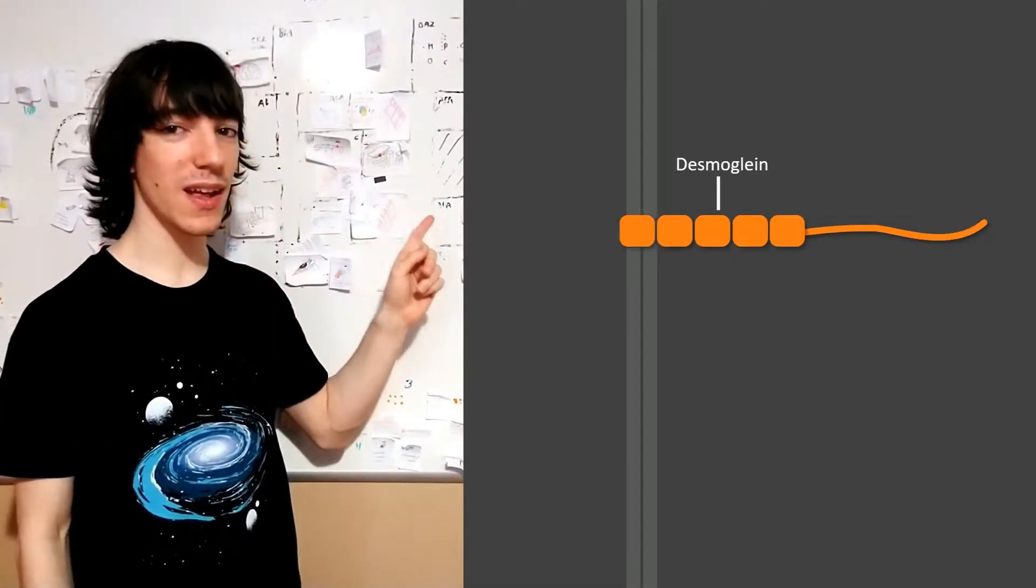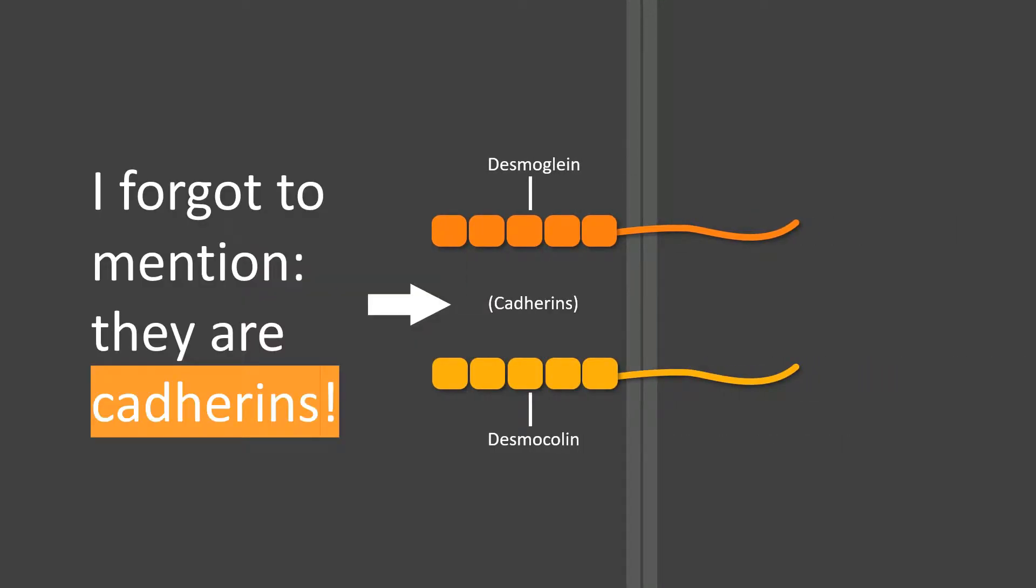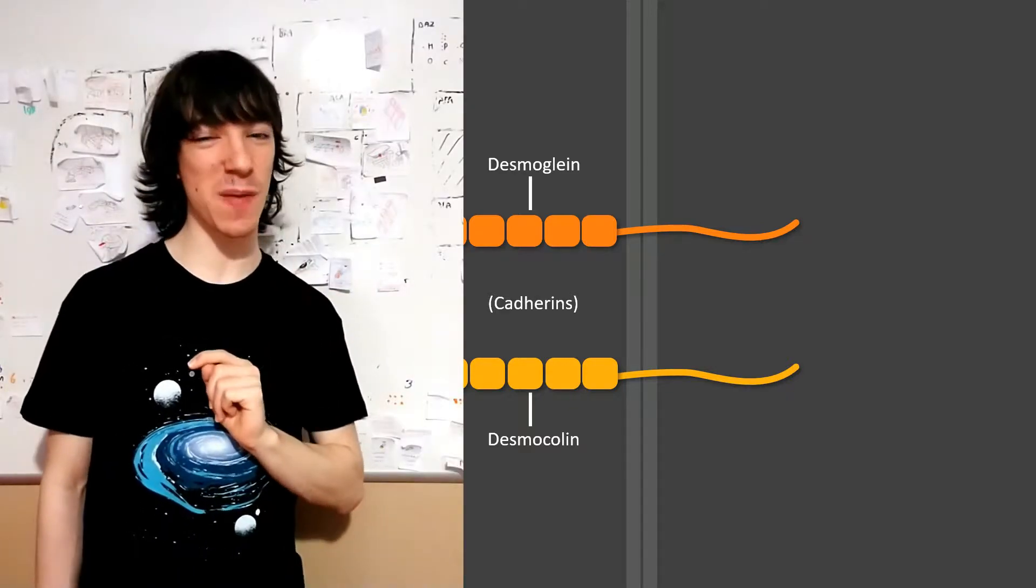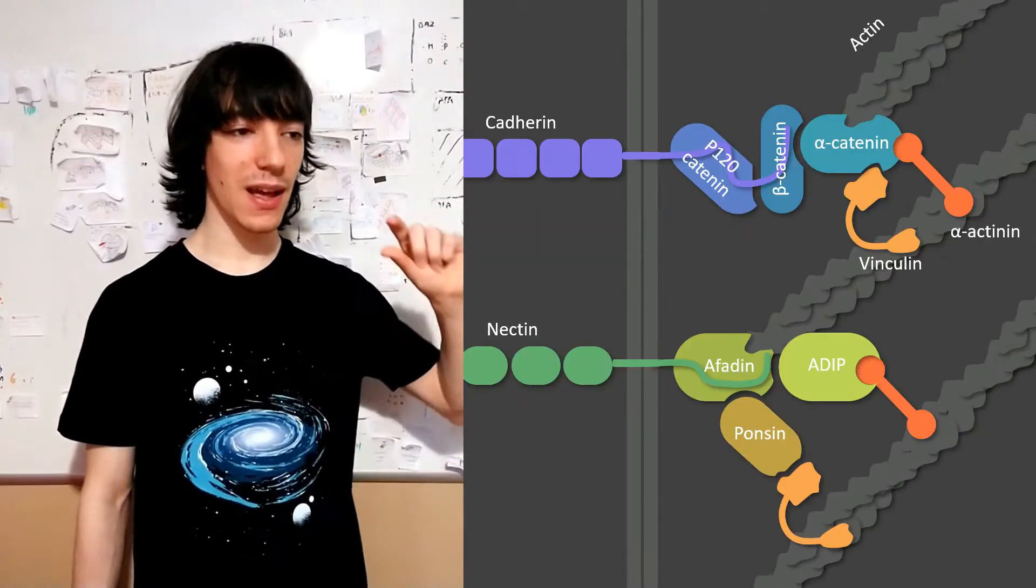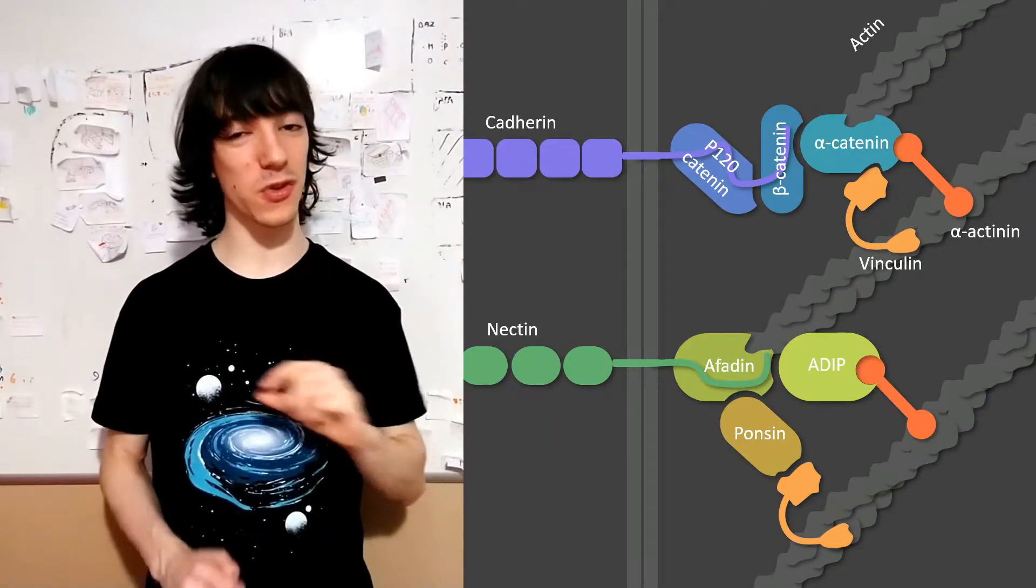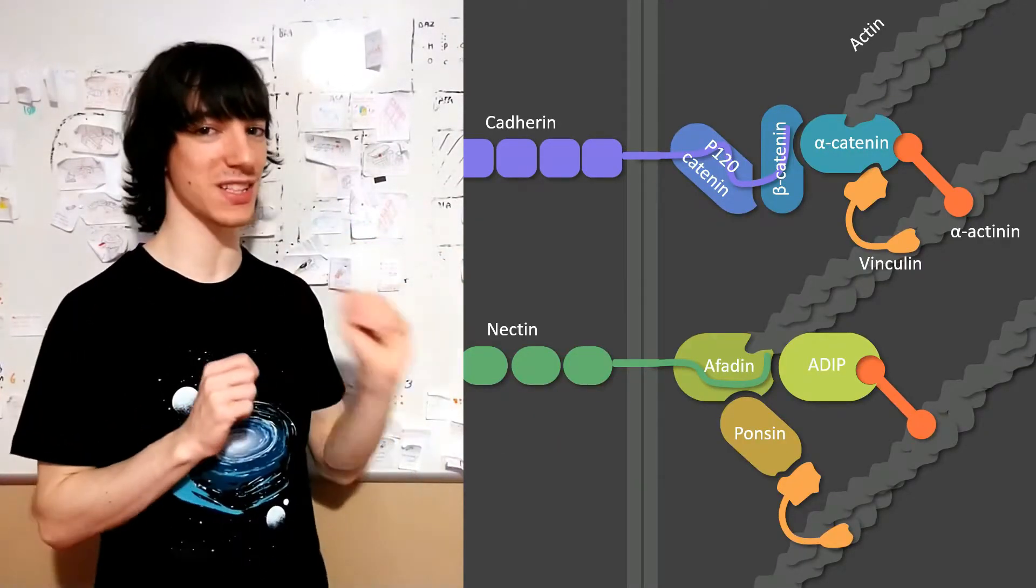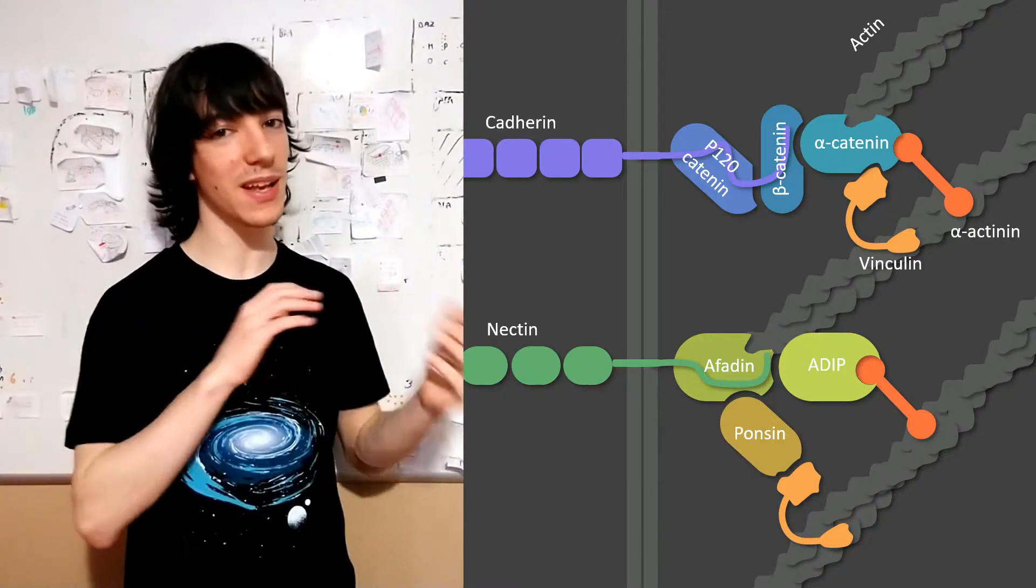The ones in desmosomes are desmoglein and desmocollin. And we have already mentioned them in a previous video, when we talked about adherent junctions. Cadherins were one of the kinds of transmembrane proteins in adherence junctions, the other one being nectins.